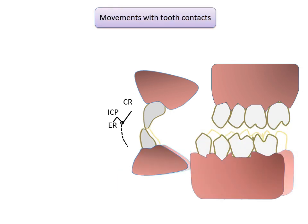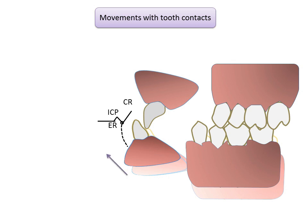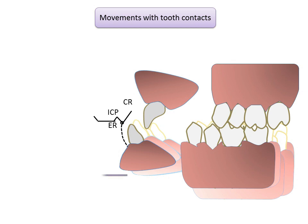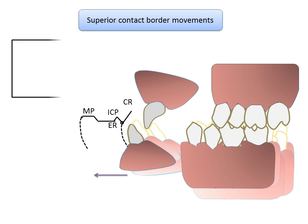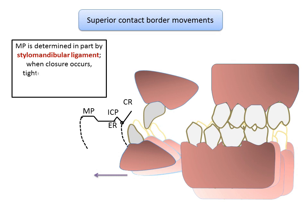The lingual inclines of maxillary anterior teeth result in an antero-inferior movement of the mandible, continuing until maxillary and mandibular anterior teeth are in edge-to-edge relationship, after which horizontal movement continues until the incisal edges of mandibular teeth pass beyond the edges of maxillary teeth. The mandible then moves superiorly until posterior teeth contact. Because the maximum protrusive position is determined in part by the stylomandibular ligaments, tightening of ligaments during closure produces a posterior movement of the condyles.